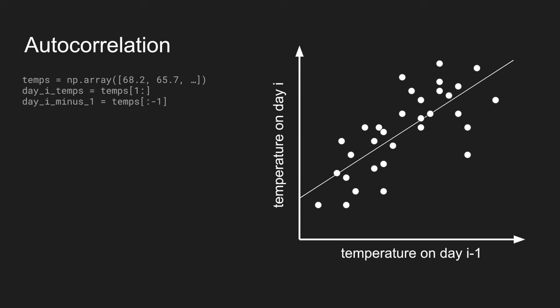We would expect this to be correlated, in the case of temperatures, because the temperature from one day to the next does change, but usually not as much as it changes from one month to the next, or from one season to the next. So, we would expect this to have a reasonable amount of correlation.